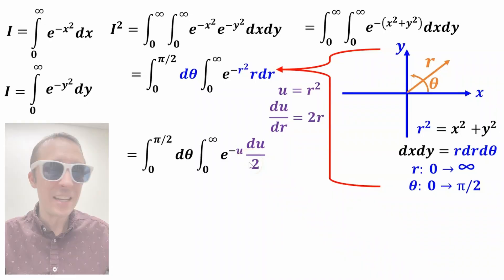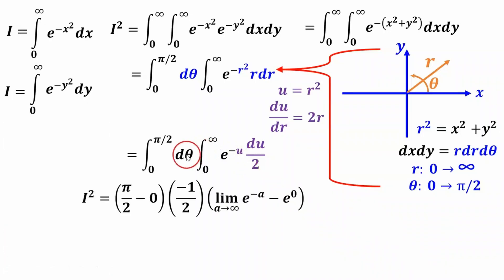And at this point, we can just integrate this. This is no problem at this point. Integral of d theta is theta evaluated from zero to pi over two. The integral of e to the negative u is literally e to the negative u.